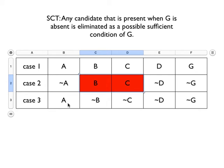Then if we look down in case three, we notice that A is present when G is absent, and that means that we can eliminate A as a sufficient condition for G.